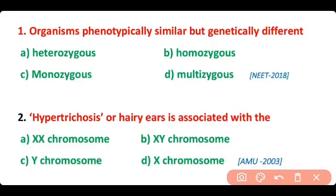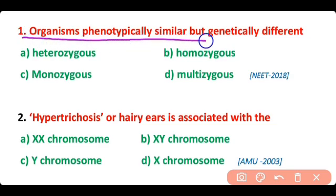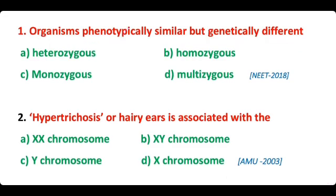Question number 1. Organisms phenotypically similar but genetically different are called as heterozygous individuals. So correct answer is option A.